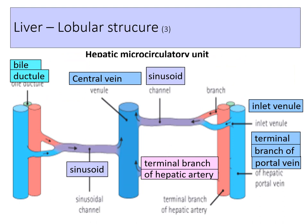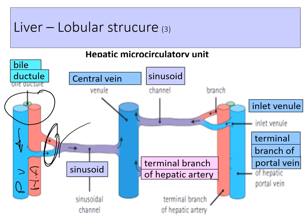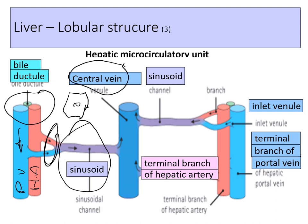At the portal tract area, you can find branches of the portal vein and hepatic artery. Both blood supplies mix in the hepatic sinusoids within the hexagonal classic hepatic lobule. The sinusoidal blood drains into the central vein, then the hepatic vein, and finally to the inferior vena cava. This completes the description of the classic hepatic lobule classification.